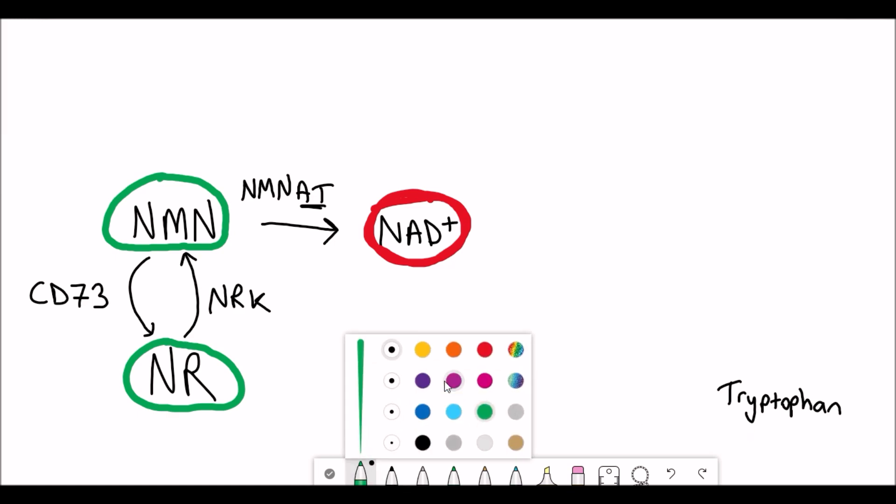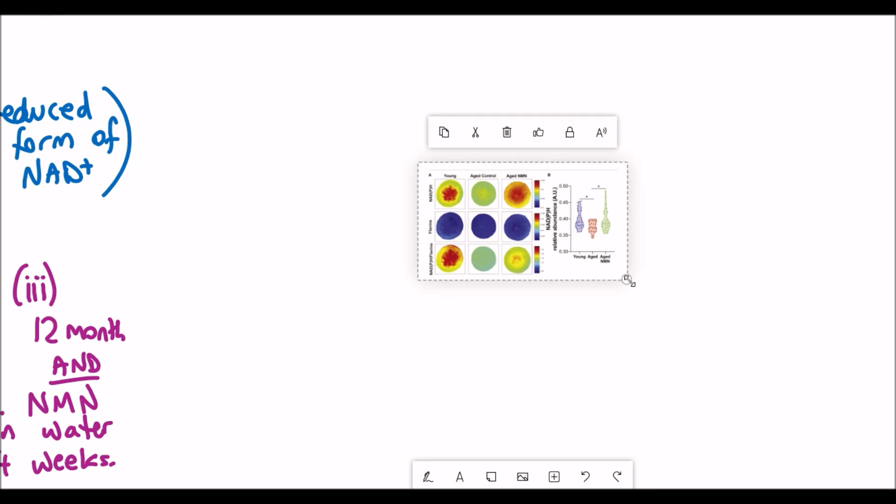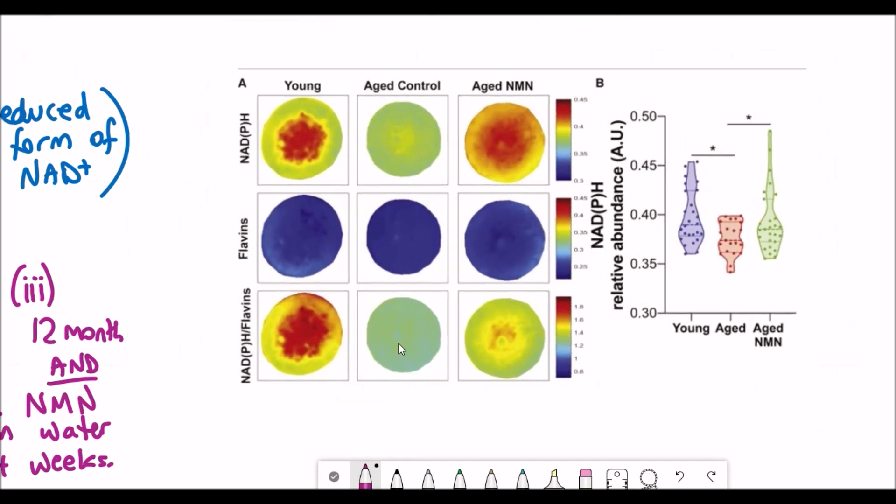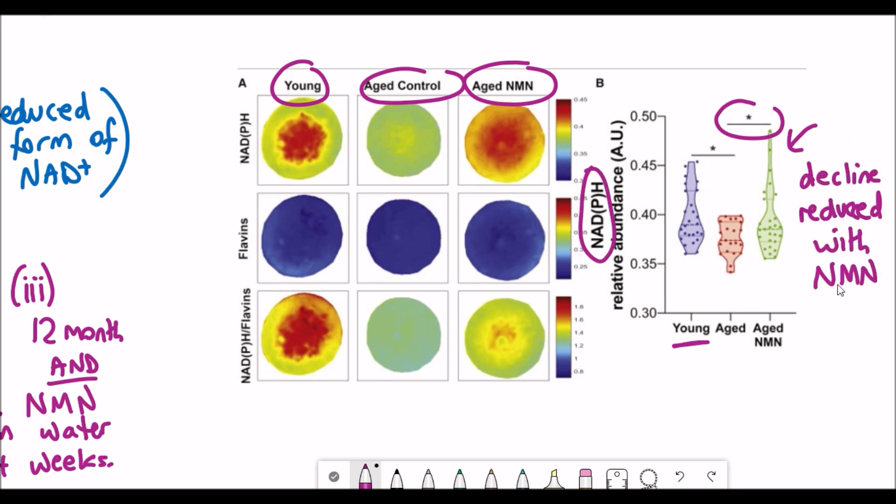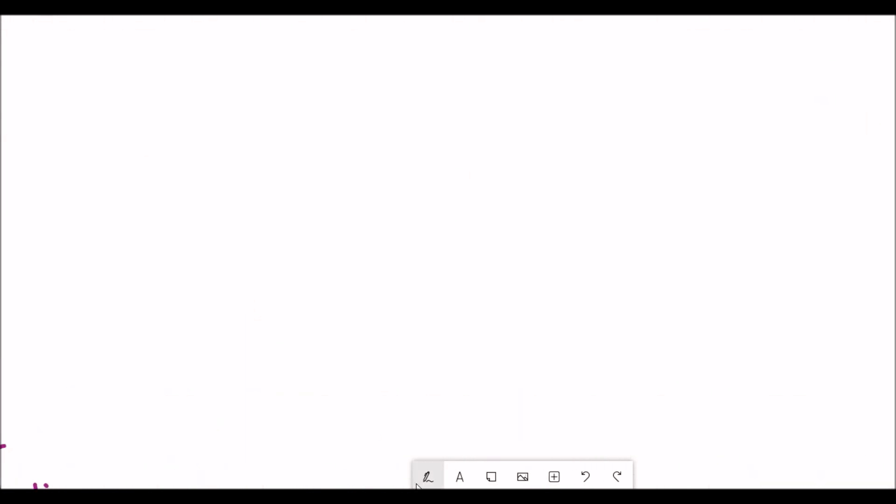They did this from extracted mature oocytes in young mice around 4-5 weeks old, old mice around 12 months, and older mice that had been treated with NMN for four weeks. NMN is nicotinamide mononucleotide, a precursor for NAD+.